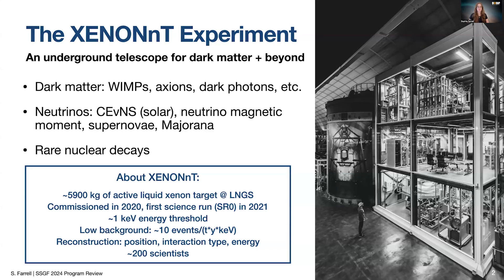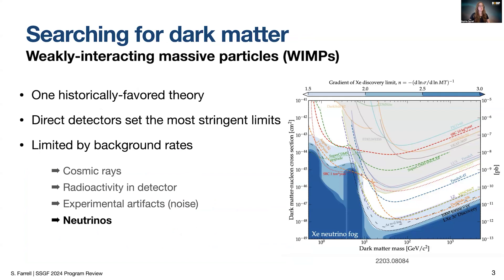The XENONnT experiment is a direct dark matter detector that is filled with several tons of liquid xenon, and its goal is to observe rare particle interactions. Its technology enables a range of other extremely sensitive search efforts, including those of neutrinos and rare nuclear decays. While neutrinos pose an irreducible background for dark matter searches, as depicted by the blue gradient of neutrino background introduced to dark matter interactions in the figure on the right,